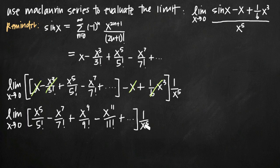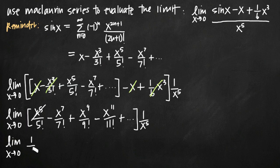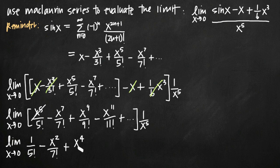When we distribute the one over x to the fifth across each term, we divide each term by x to the fifth. The x to the fifth over 5 factorial divided by x to the fifth gives us 1 over 5 factorial. For x to the seventh over 7 factorial, we're left with negative x squared over 7 factorial. We're just reducing the power in the numerator by 5, so subsequent terms become x to the fourth over 9 factorial minus x to the sixth over 11 factorial, and so on.